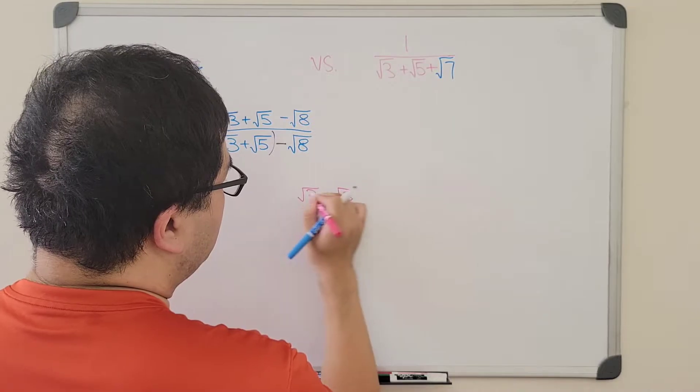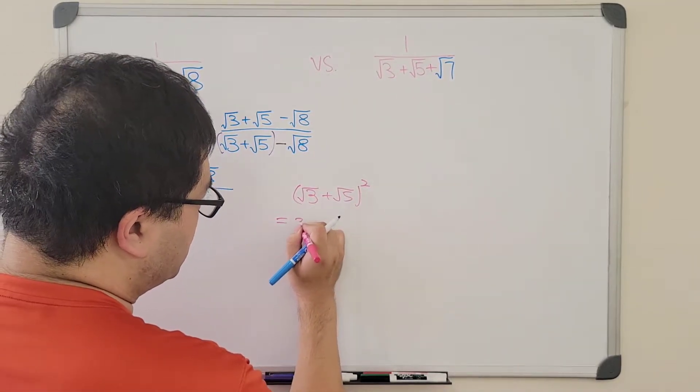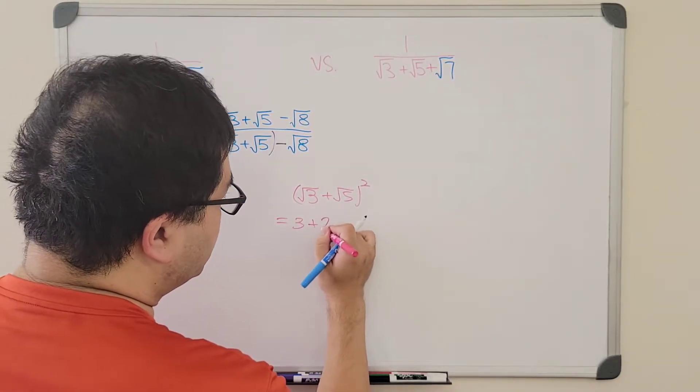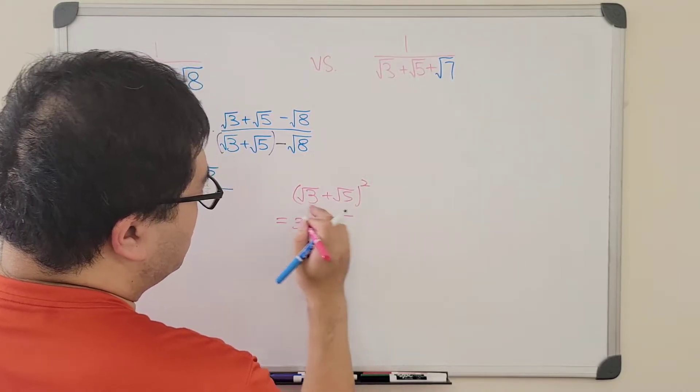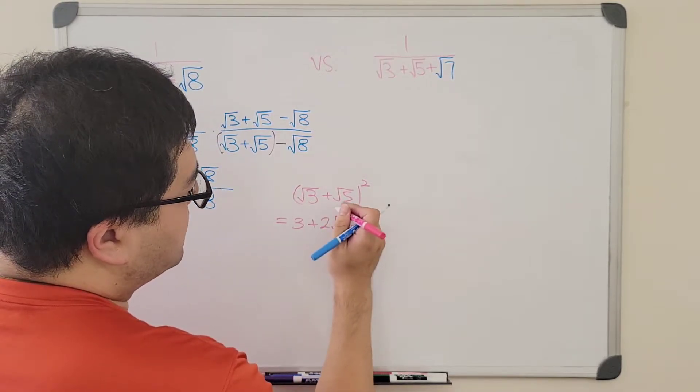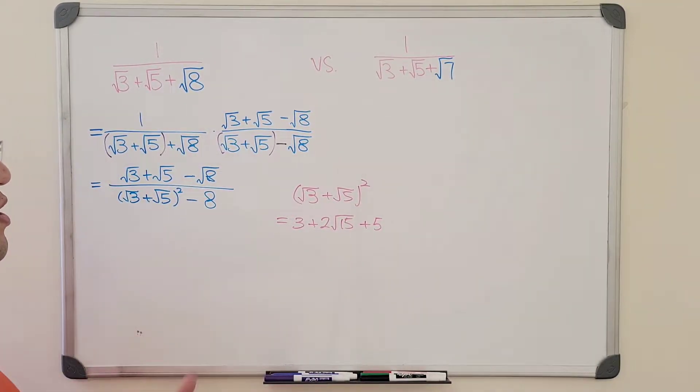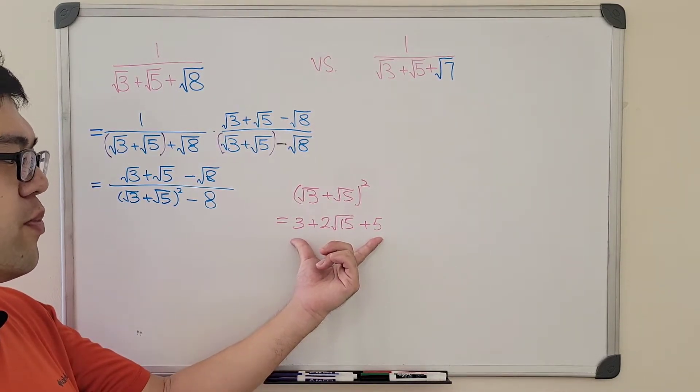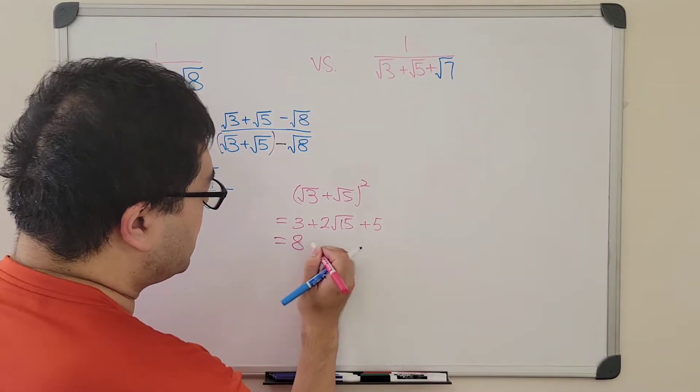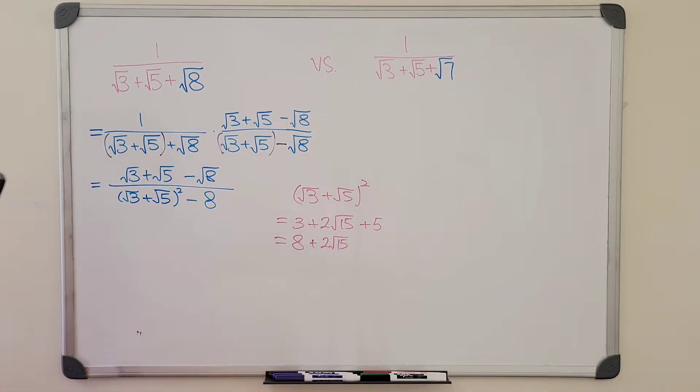So the sum squared is equal to square of the first term, which is 3, plus 2ab, which is 2 times square of 3 times square of 5, which is square of 15, plus the square of the last term, which is plus 5. So that now, for the whole number part, we have 3 plus 5, giving us 8, and then plus the term in the middle, 2 times square of 15.